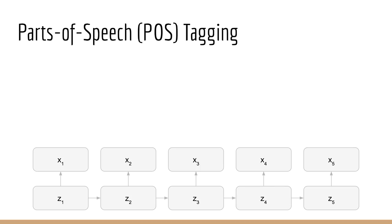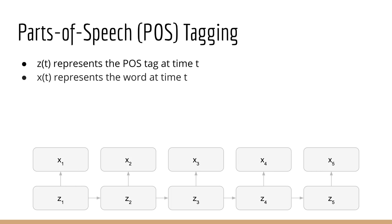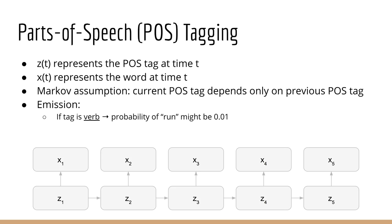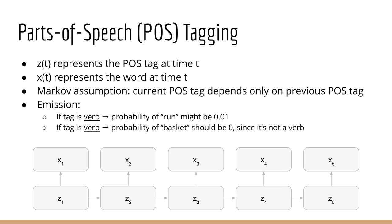So if we were to draw out the HMM for a parts of speech tagger, this is what it would look like. The hidden states are the part of speech tags. The Markov assumption is that each part of speech tag depends only on the previous part of speech tag. The emission probability governs the probability of generating each word from our vocabulary given the current part of speech tag. For example, if your part of speech tag is verb, then run might have a probability of 0.01, whereas basket should have a probability of 0 since it is not a verb.